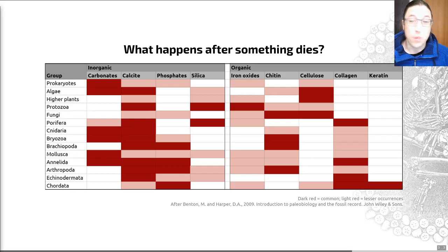To quickly whiz through those, carbonates, particularly calcium carbonate, is quite common and is found in, for example, corals, bryozoans, brachiopods, mollusks, many arthropods, and echinoderms.